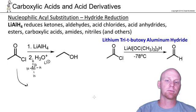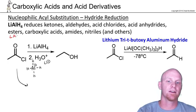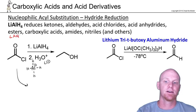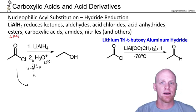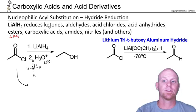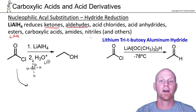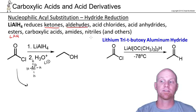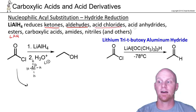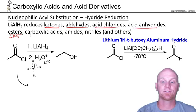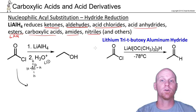Now we'll take a look at lithium aluminum hydride — sometimes abbreviated as LAH. With lithium aluminum hydride, it reduces ketones and aldehydes just like sodium borohydride, but we're also going to find out that it'll reduce every single one of the carboxylic acid derivatives, whether it be acid halides, anhydrides, esters, carboxylic acids themselves, amides, or nitriles. It will reduce all of them.